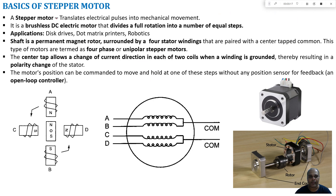A stepper motor translates electrical pulses into mechanical movement. When we apply a voltage or current to a stepper motor, it converts this electrical signal into mechanical movement. This mechanical movement will be in terms of small increments of spatial position, so it is not going to be a continuous rotation.